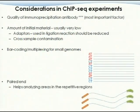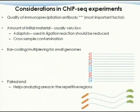The next consideration is paired-end technology. You sequence both ends of each DNA fragment. An additional benefit is it helps analyze repetitive regions. If you work on DNA methylation or histone modification — especially histone markers in heterochromatin — there are many repetitive elements that get pulled down, so paired-end sequencing can be very helpful.